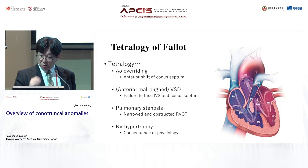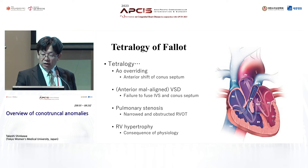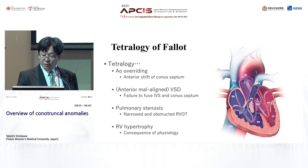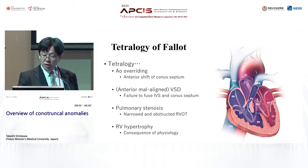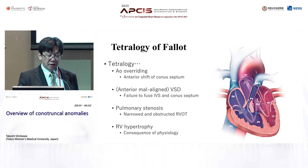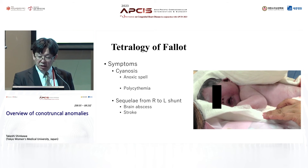Let me talk about tetralogy of Fallot. Tet is the most famous conotruncal anomaly and has four features: aortic overriding, ventricular septal defect, pulmonary stenosis, and RV hypertrophy. It is believed that anterior shift of the conoseptum resulted in aortic overriding and narrowed RVOT including the pulmonary valve, and failure to fuse the conotruncal septum and interventricular septum resulted in the anterior malaligned VSD. Patients with tet have various degrees of cyanosis depending on the severity of RVOT obstruction and may have hypoxic spells, polycythemia, or later right-to-left shunt complications.